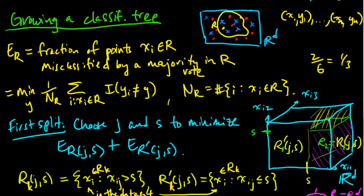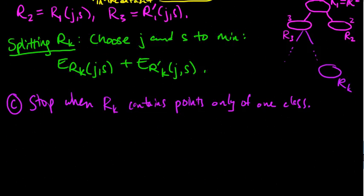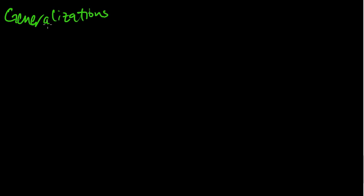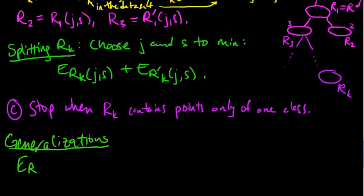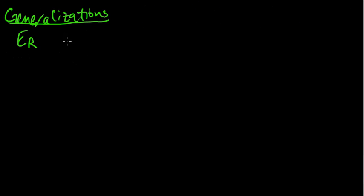We just saw how to grow a classification tree using the CART methodology, and in this video we'll take a look at some generalizations of this type of procedure. The first type of generalization regards the error measure that we used. Remember we had this E sub R, which was the fraction of points in region R — a subset of D-dimensional real space — that would be misclassified if we use a majority vote in that region. We use this metric, this E sub R, as our criteria for splitting, and this is referred to as an impurity measure.